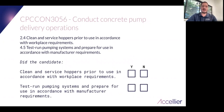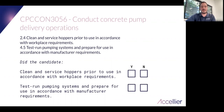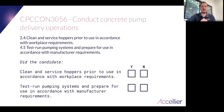Here's an example where you could almost use the wording straight from the performance criteria: concrete pump delivery operations. For example, 2.4: 'Clean and service hoppers prior to use in accordance with workplace requirements,' and 4.5: 'Test run pumping systems and prepare for use in accordance with manufacturer requirements.' These are really hard to reword significantly. You might split out 'test run pumping systems' as one item and 'prepare for use in accordance with manufacturer requirements' as another. Knowing your industry will help a lot here.